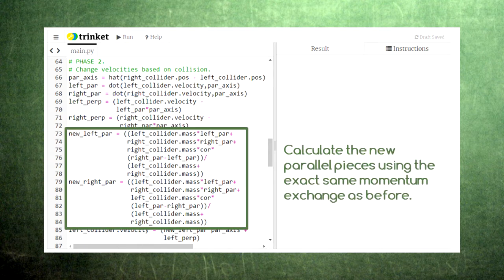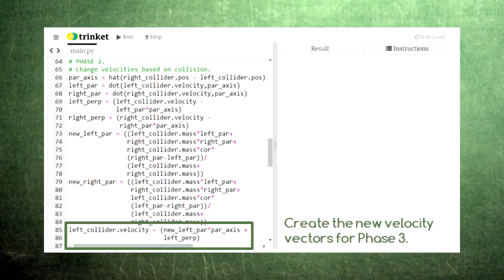Here we calculate the new parallel piece of each velocity using the same momentum exchange formula that we used before. We've simply changed the name of the velocity variables involved.